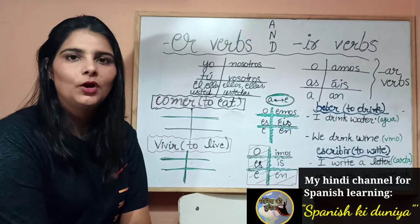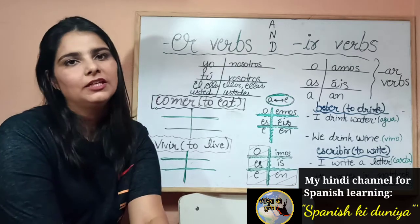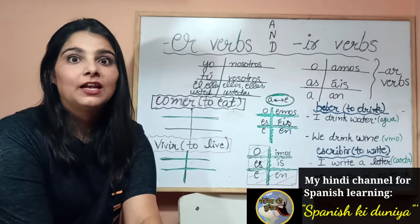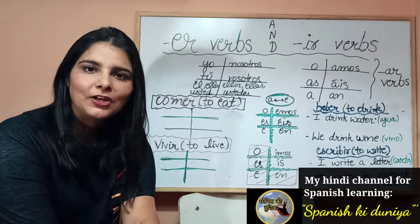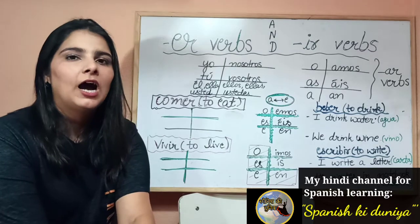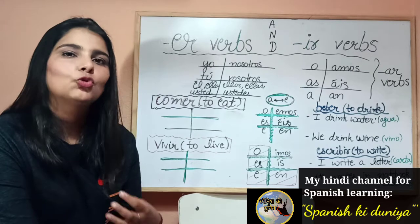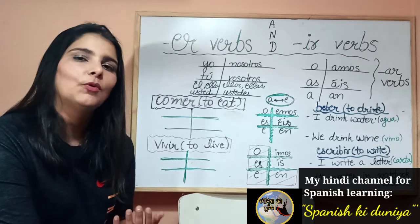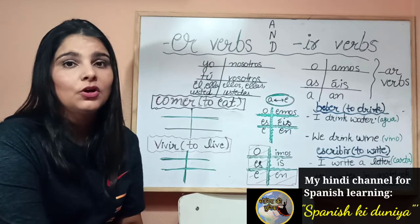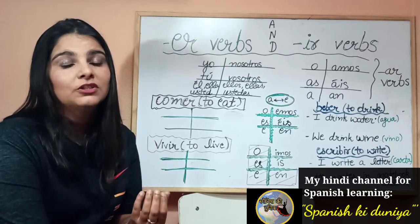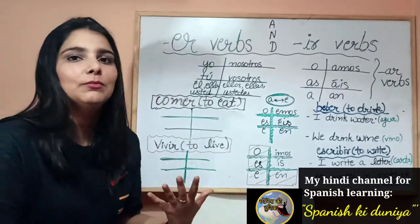Hola y bienvenidos. Hello and welcome. Vamos aprender el español — this is the third part of the series. El verbo en español. In the last two parts we got to know a lot of things about verbs: how a verb looks in Spanish and how this table is so important when it comes to learning how a verb functions, how it changes with time and person. If you have not watched the last two videos, please go and watch them in order so that this video becomes much more easy and meaningful for you.